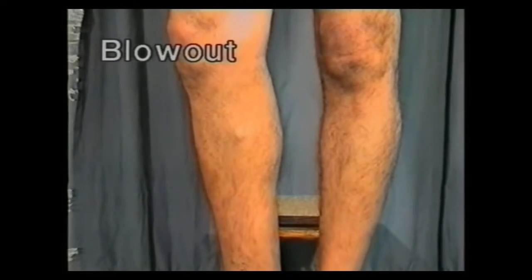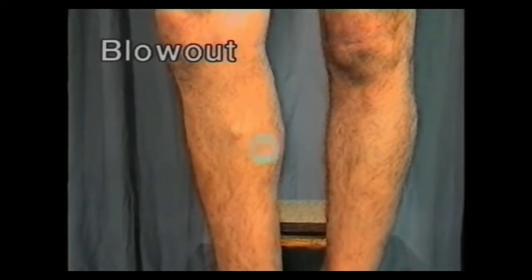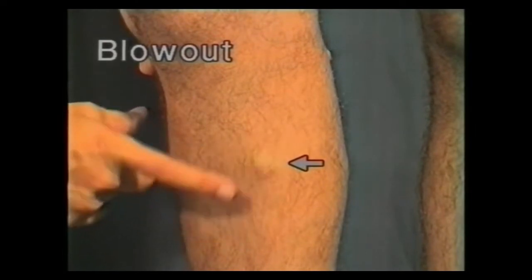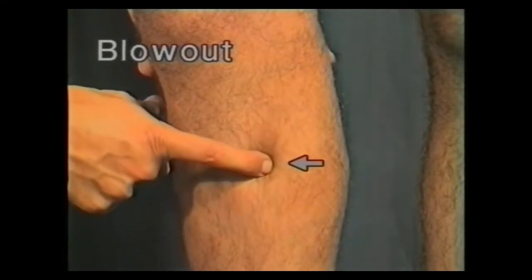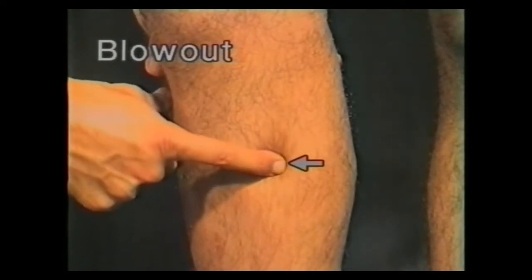Now inspect the length of the varicose vein for a blowout — a localized bulge in the vein indicating an incompetent perforator. This is a blowout in the leg. In this patient, two blowouts are seen in the thigh. When a blowout is seen, mark it with a skin pencil.